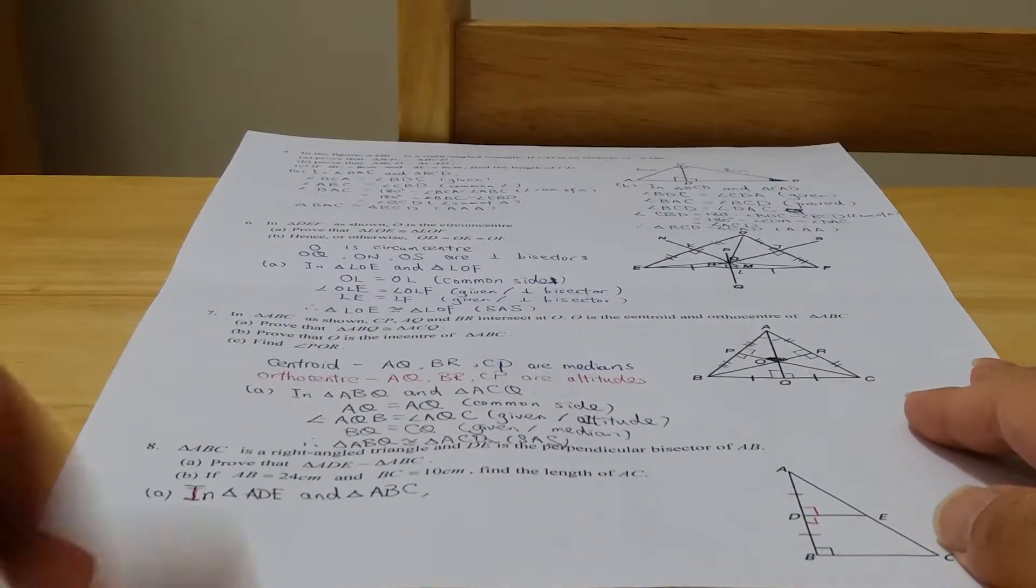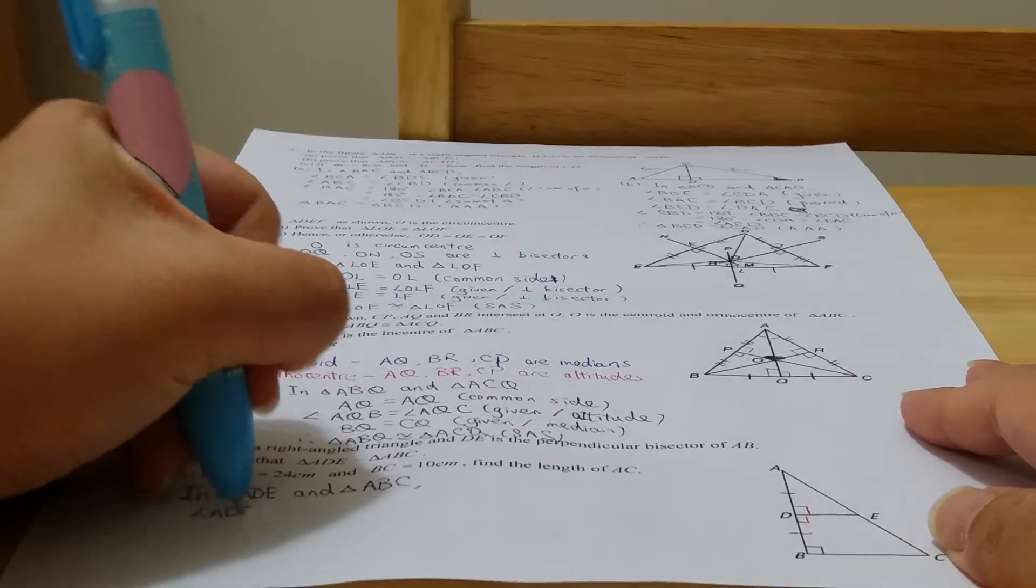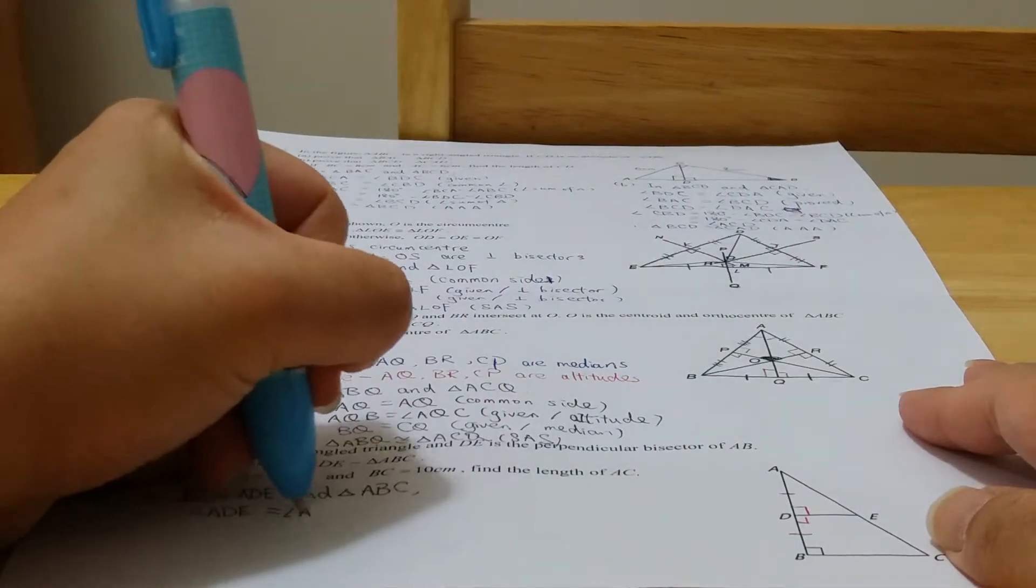First of all because they have a right angle, so angle ADE equals angle ABC.